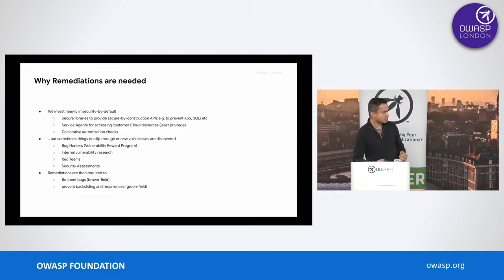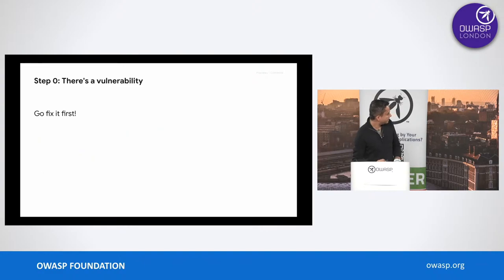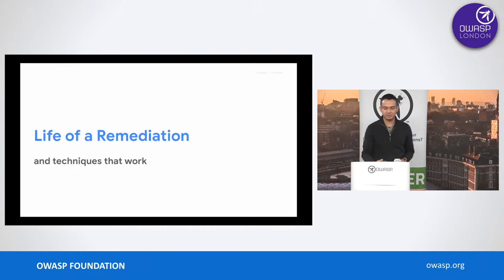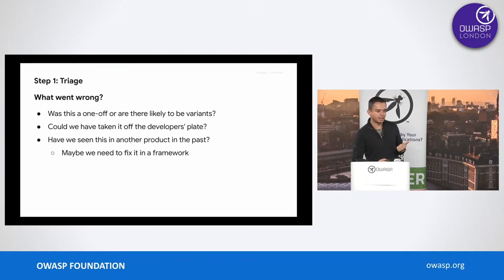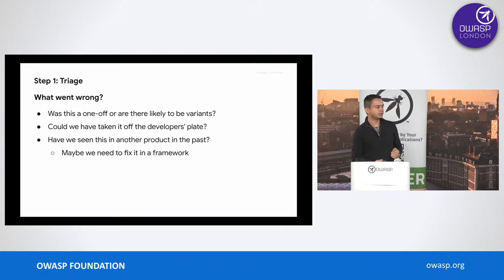We want to first fix the latent bugs. We found a bug, we fixed it, but then there could be variants — that's the brownfield. So we fix the brownfield, and then we want to make sure that there is no backsliding and we prevent recurrences in new products — that's the greenfield. It always starts with a vulnerability. First thing to do is fix it. We have mature vulnerability management programs and incident response teams. After they're done, we come in and take a look at the bug and try to see what went wrong. One of the questions we ask is: was it a one-off? If it's an implementation bug in the business logic of a specific API, maybe there's not much more we can do — we fix it and carry on. But if it is something that's likely to have variants, we want to make sure we find those variants and fix them.